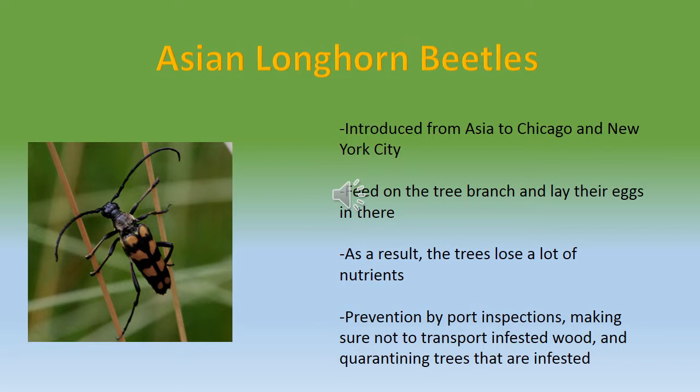The Asian longhorn beetles were first introduced from Asia to Chicago and New York City in the 1990s, brought in on firewood and imported wood from Asia. Like the emerald ash borer, they feed on the trunks and branches of deciduous trees and lay their eggs there. Since the trunk is where the sap is stored, the trees end up losing a lot of their nutrients.